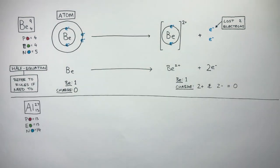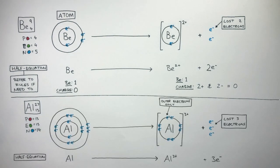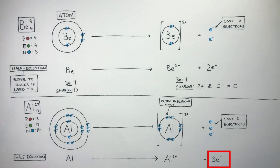Pause the video here to see if you can use this information about aluminium to write a half equation for when an aluminium atom forms an aluminium cation. The half equation shows how the aluminium atom has lost three electrons to become an aluminium cation with a charge of 3+.